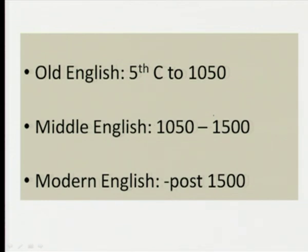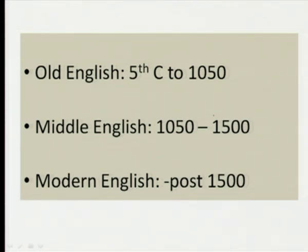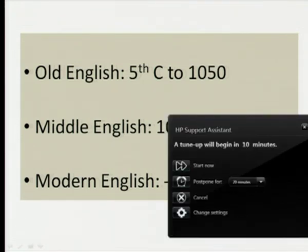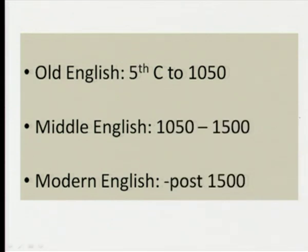We usually divide the history of the English language into three phases — though nowadays we also talk about a fourth phase. Generally we talk about three phases: Old English, Middle English, and Modern English. We will see the different aspects of these in later lectures, but for now suffice it to talk about these three broad phases.